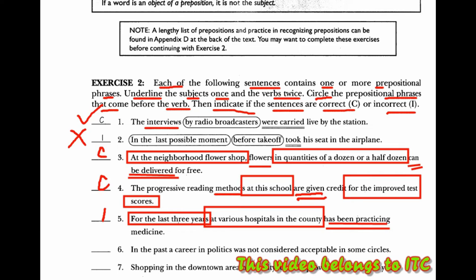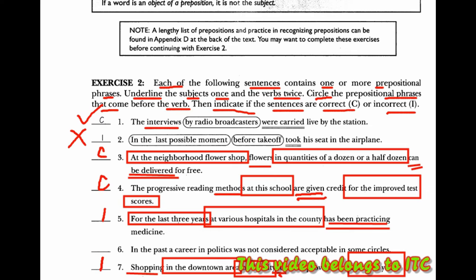Pada nomor 7, 'in the downtown area' itu adalah frasa preposisi, 'of this city' juga frasa preposisi, 'in recent years' juga frasa preposisi. Sudah tiga frasa preposisinya. Subjeknya adalah 'shopping', tapi juga ada 'it'. Jadi kalimat ini kita boleh bilang incorrect, karena kalimat ini memiliki dua subjek dan yang harusnya 'it'-nya harus dihilangkan, tidak boleh ada.